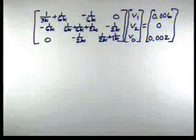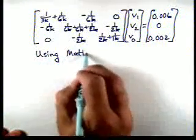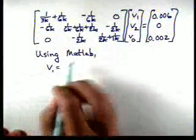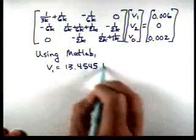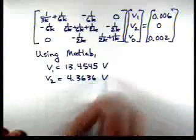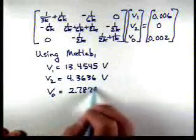So now we're ready to solve. If we use MATLAB to solve these equations, then here are the results. V1 is 13.45 volts. V2 is 4.3636 volts. And V0 is 2.7879 volts. And there is our answer.